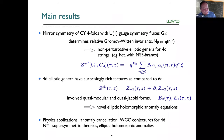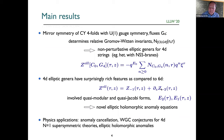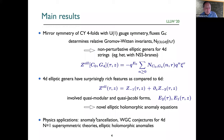A surprising finding is that these elliptic genera in four dimensions, which look very simple at first sight, are actually very rich. In general, they will have a derivative piece which spoils modularity in an unexpected way, giving rise to quasi-Jacobi forms and novel kinds of anomaly equations. Physics applications include anomaly cancellation, weak gravity conjectures for four-dimensional N=1 supersymmetric theories, and elliptic holomorphic anomalies.